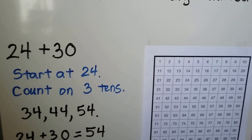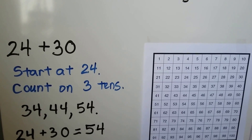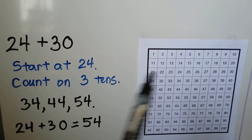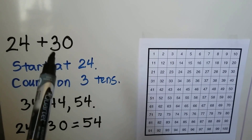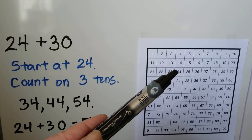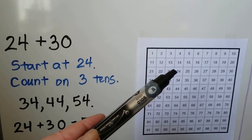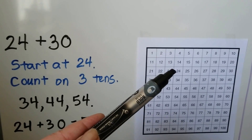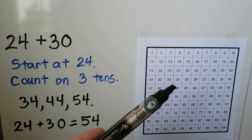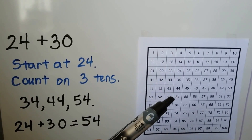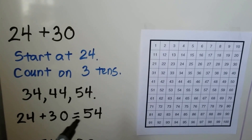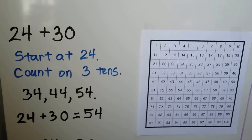Let's look at 24 plus 30. We start at the 24 and count on 3 tens for the 30: 34, 44, 54. So 24 plus 30 is equal to 54.